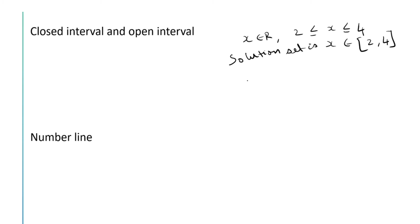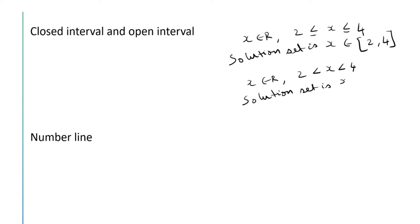On the other hand, if x is a real number and 2 < x < 4 — these type of inequalities are called strict inequalities, and the previous type are called slack inequalities. In the case of strict inequality, the solution set will be all those points between 2 and 4 without including 2 and 4. So the solution set is x belongs to the open interval (2, 4). This means 2 and 4 are not included; only those points strictly between 2 and 4 are included.